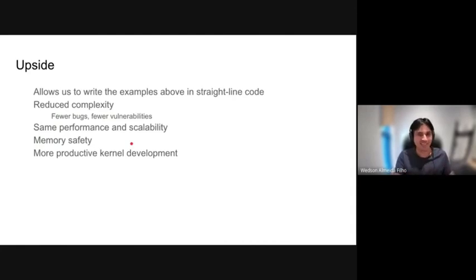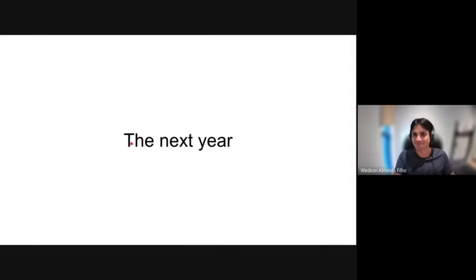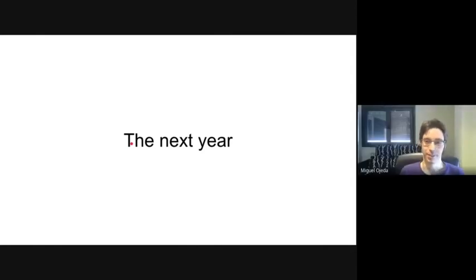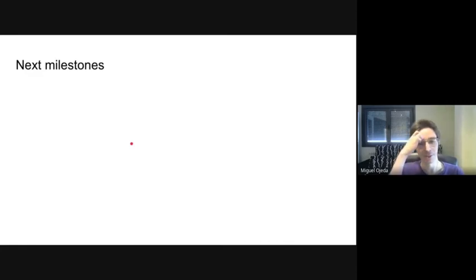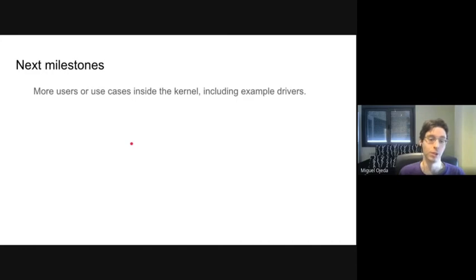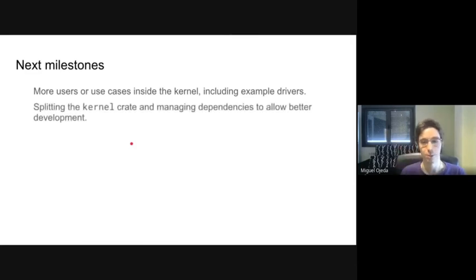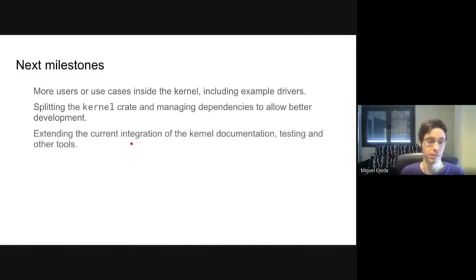With that, Miguel will come back to talk about what's coming in the next year. Thanks, Watson. For the future milestones: asynchronous Rust is one thing we are working on. We also want more use cases and more uses of Rust support inside the kernel — more example drivers — as this is the end goal. We want to split the kernel crate into several smaller ones and manage crate dependencies better, which should improve development for kernel maintainers and developers. We also want to improve integration of documentation, testing, and the rest of the toolchain.